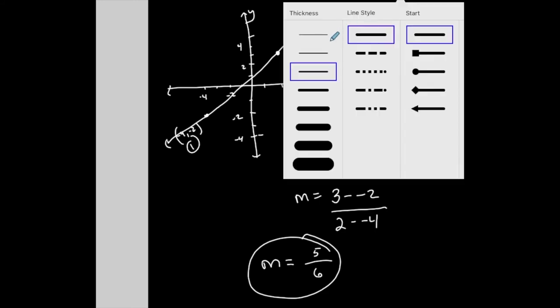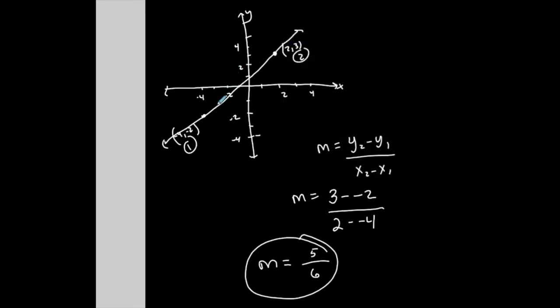Now if I want to—let's say I have the graph—do it another way. What I could do is, again, it's change in y over change in x. Here's my first point, here's my second point. What am I doing to get from this point to this point vertically? I have to go up 1, 2, 3, 4, 5.